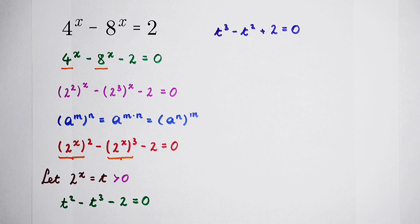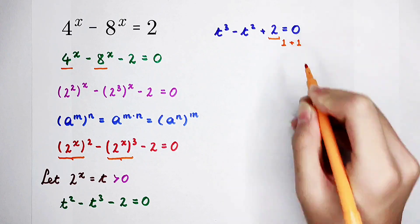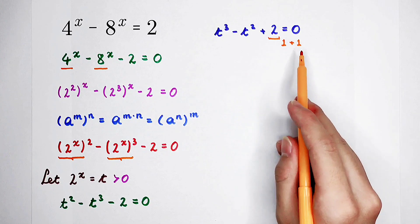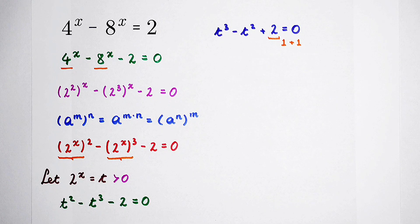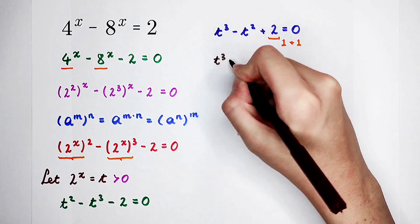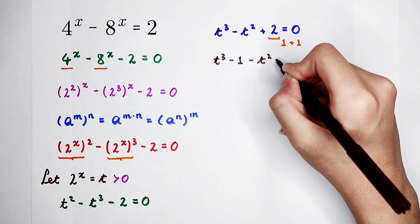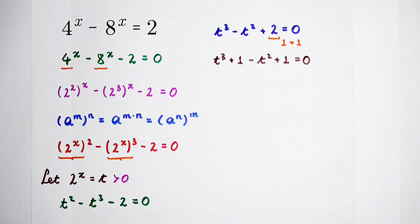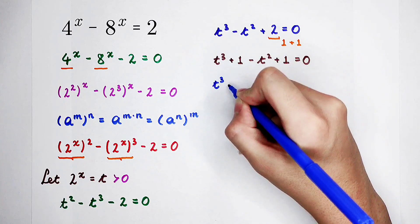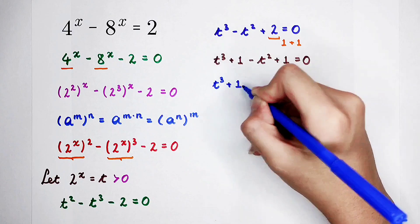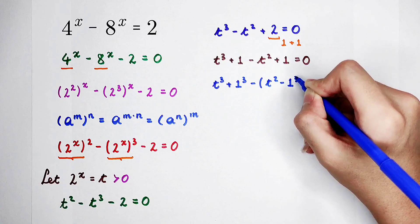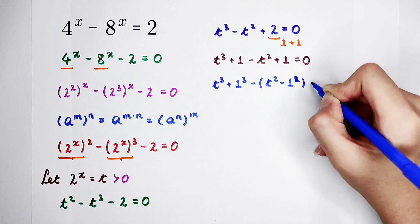So how do you solve this equation? By factorizing, of course. We write the 2 as 1 plus 1, because 1 is both 1 cubed and 1 squared — it is both a cube number and a square number. So we get: t cubed minus 1 minus t squared plus 1 equals 0, which gives us t cubed plus 1 cubed, minus the quantity t squared minus 1 squared, equals 0.